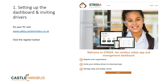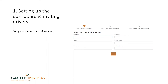To set up your account, you'll need to visit www.safety.castleminibus.co.uk and click on the Register button. Strider is free to use and you are welcome to set up an account without contacting Castle beforehand. Start by adding your first name, your last name, an email address, a phone number, and a password that you'll need to note down and remember for future use.